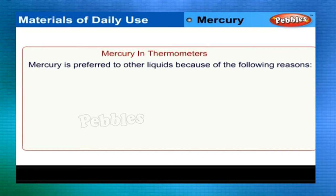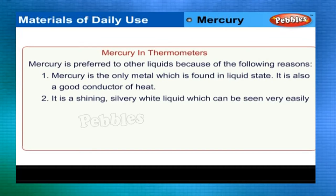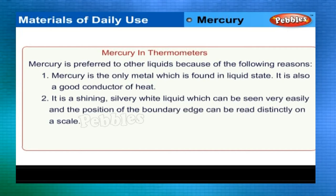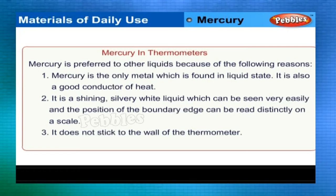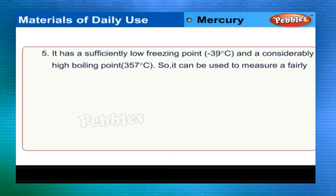Mercury is preferred in thermometers because: it is the only metal found in liquid state; it is a good conductor of heat; it is a shining silvery-white liquid easily seen and read on a scale; it does not stick to the thermometer wall; and it has uniform contraction and expansion.